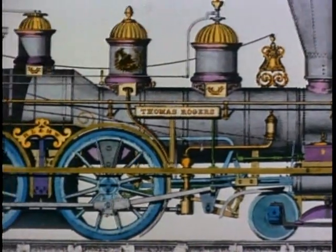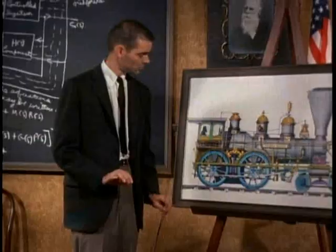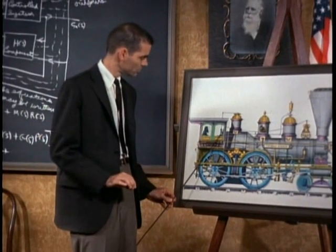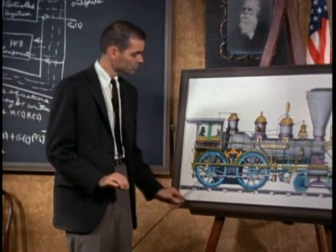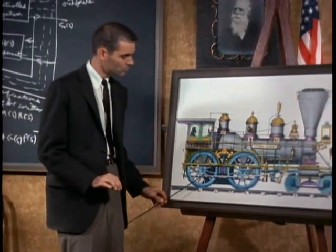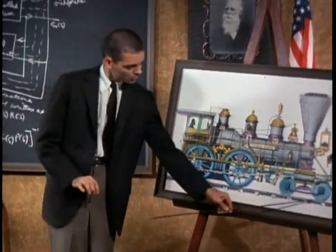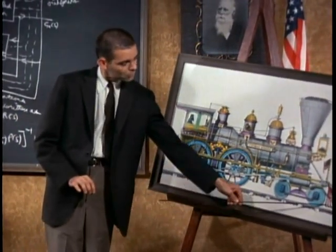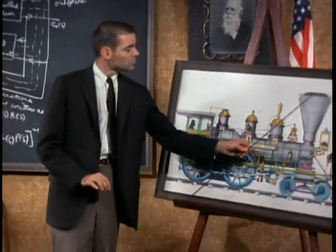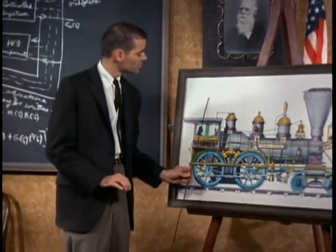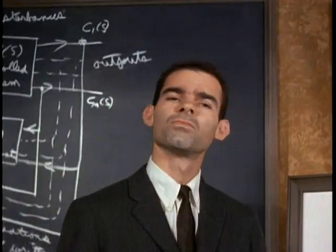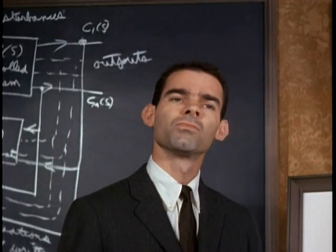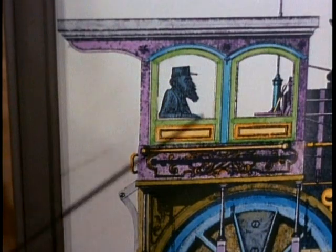The speed of the locomotive is a function of the heat in the firebox, the position of the throttle, the diameter of the wheels, the grade of the track, and the direction and the velocity of the wind. It is not likely to depend on the beauty of the scenery or the color of the engineer's hair.